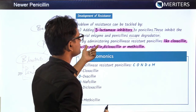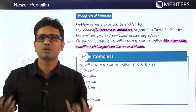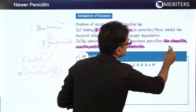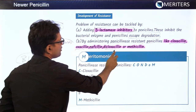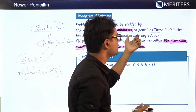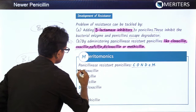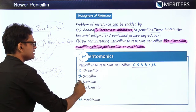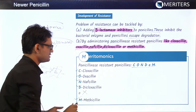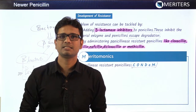The second solution to resistance is administering penicillinase-resistant penicillins — drugs that are not affected by the beta-lactamases sent by bacteria. These drugs are remembered by the mnemonic CONDOM: C for cloxacillin, O for oxacillin, N for nafcillin, D for dicloxacillin, O has no meaning, and M for methicillin. This is very important for exam purposes.